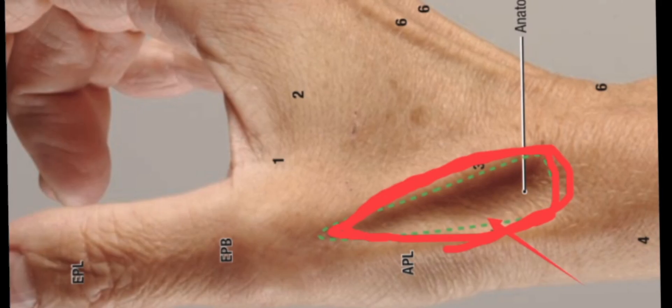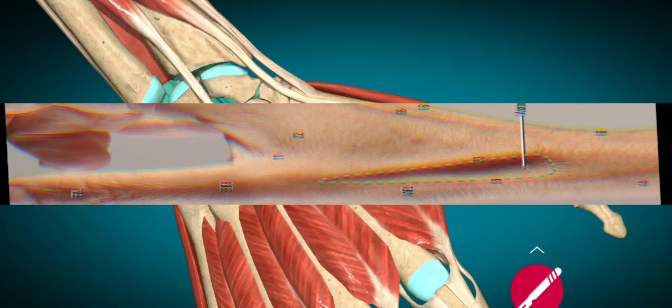The anatomical snuff box has borders, a floor, a roof, and contents. The anatomical snuff box has three borders: one is the medial border which is also called the ulnar border, the other is the radial border which is also called the lateral border, and the other is the proximal border.